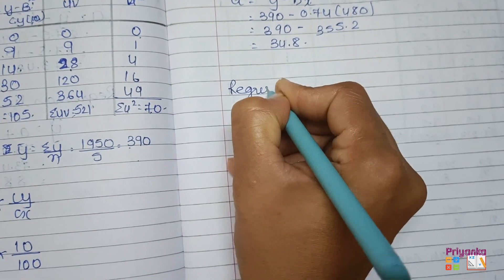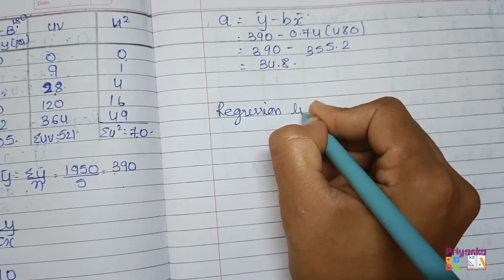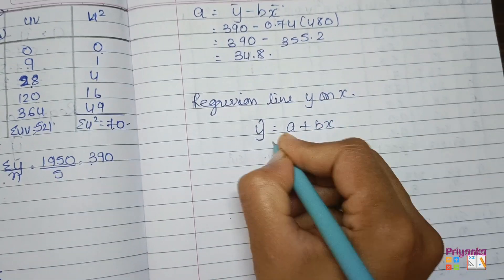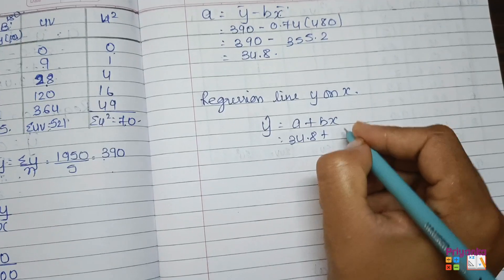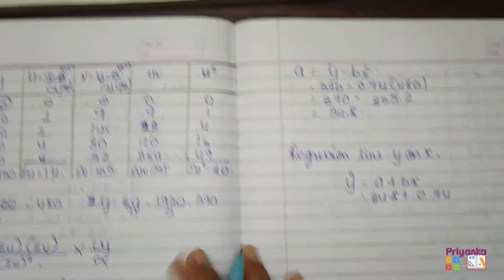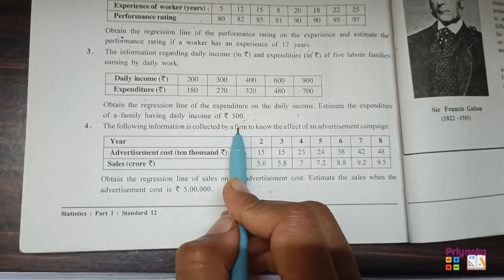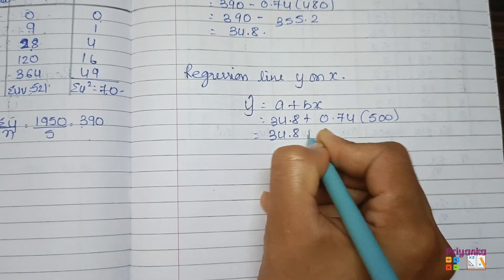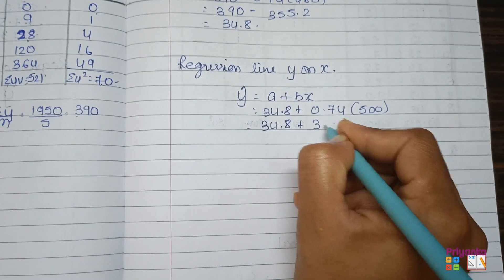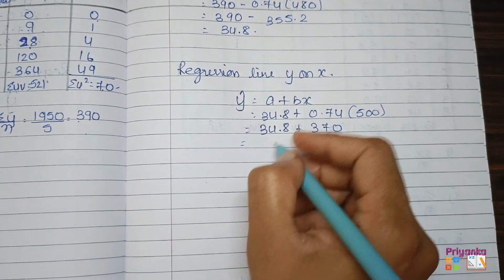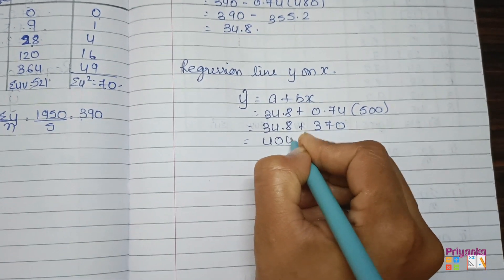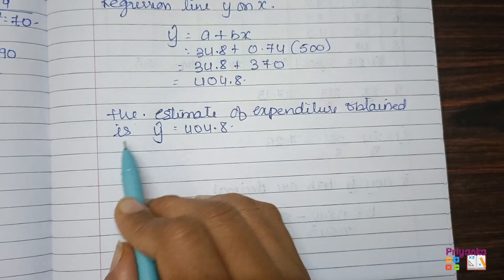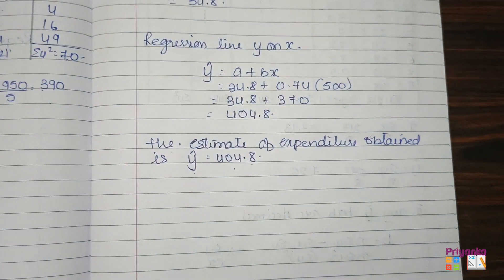The regression line is ŷ = A + Bx = 34.8 + 0.74x. For x = 500: ŷ = 34.8 + 0.74×500 = 34.8 + 370 = 404.8. Hence the estimated expenditure obtained is ŷ = 404.8.